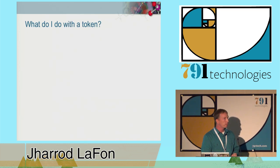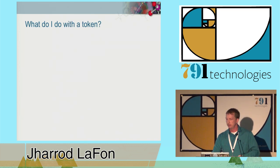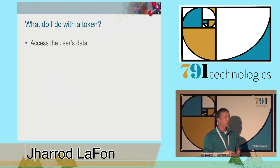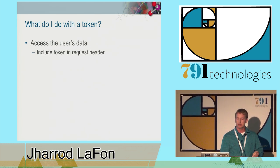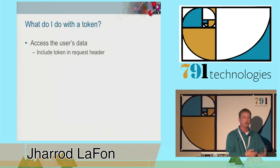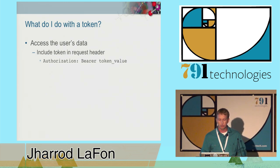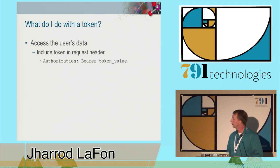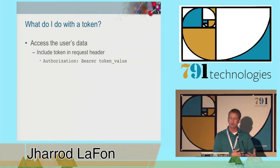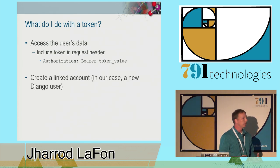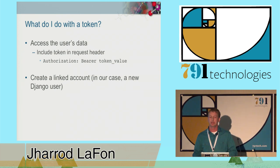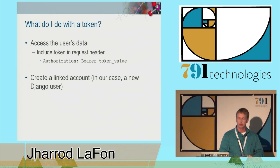So now you have a token—what do you do with it? We're going to access the user's data. The way you do that is by including that token in the request header of any request that you send to the resource server. You set the authorization header and put the word 'bearer' followed by a space and the value of the token. Then we take that data and create a linked account in our client—a new Django user—linked to the user's account on the authorization server.